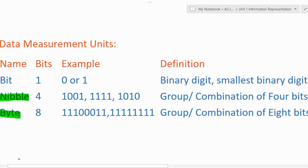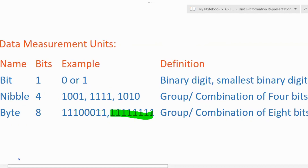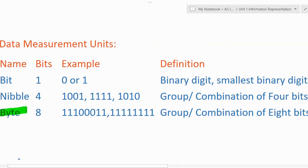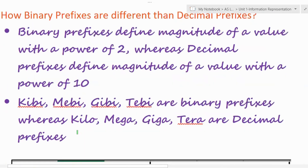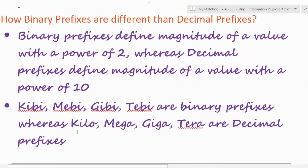Then comes byte. A byte is basically a group or combination of eight bits. For example: 11110000 or 11111111 — any combination of eight bits is a byte. So now you've understood the basic data measurement units: bit, nibble, and byte. Let's move to our main topic: how binary prefixes differ from decimal prefixes.